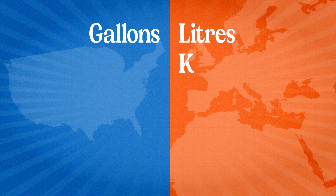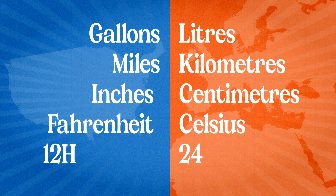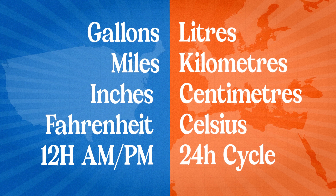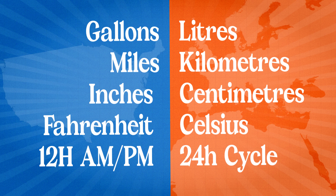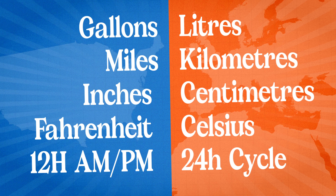They use gallons instead of liters, miles instead of kilometers, inches instead of centimeters, and Fahrenheit instead of Celsius, not to mention the 12-hour cycle with the AM-PM system instead of a 24-hour cycle. So why are they so different in seemingly every single way that they measure things when compared to the rest of the world? The reasons are kind of connected and they're pretty interesting, and that is what we are going to find out in this video.